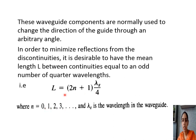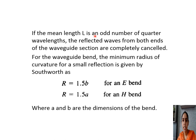This condition is maintained because if mean length L is an odd number of quarter wavelengths, the reflected waves from both ends of the waveguide section are completely cancelled. Since we only want to change the direction of the propagating wave without reflections, when designing bends and corners, ensure that L satisfies this condition — that it is an odd multiple of the quarter wavelength — so that reflections do not occur.